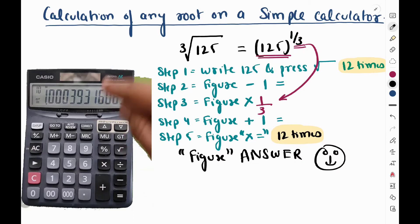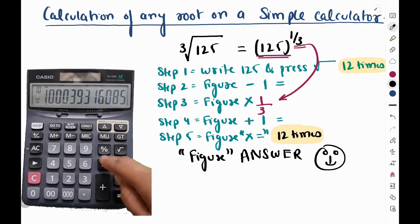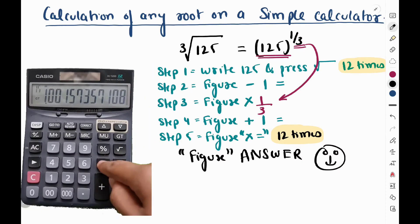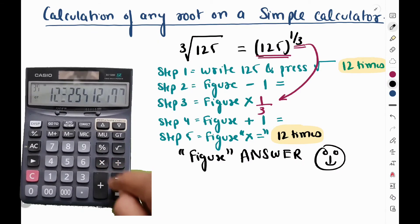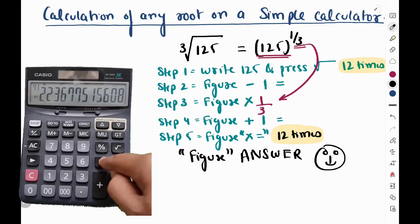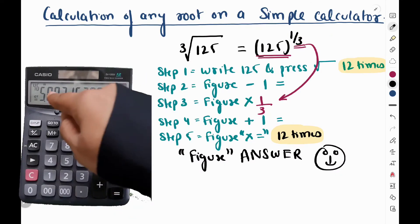Now I have to do into is equal to 12 times. So 1, 2, 3, 4, 5, 6, 7, 8, 9, 10, 11 and 12. From this my answer came, 5.